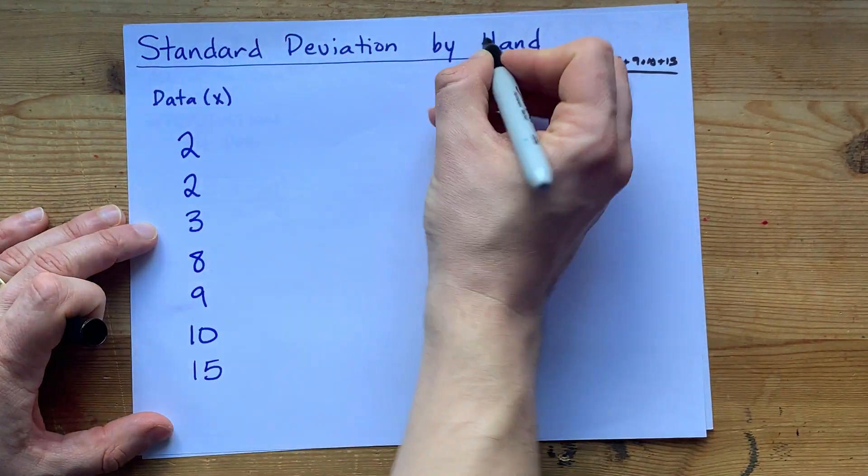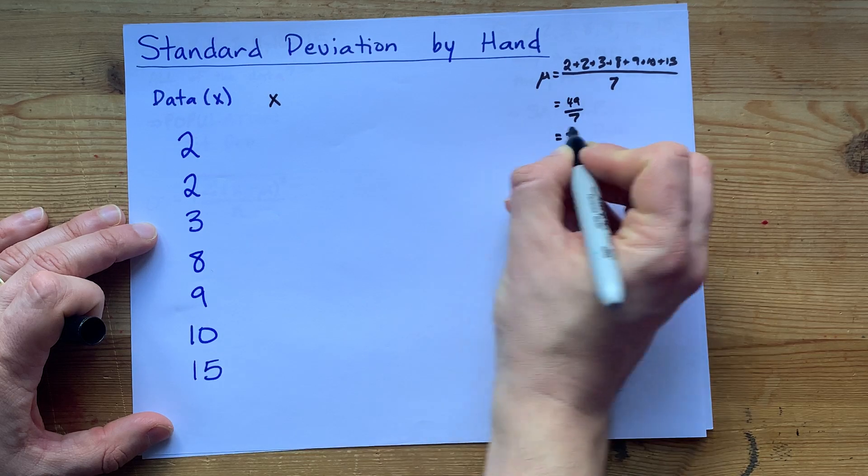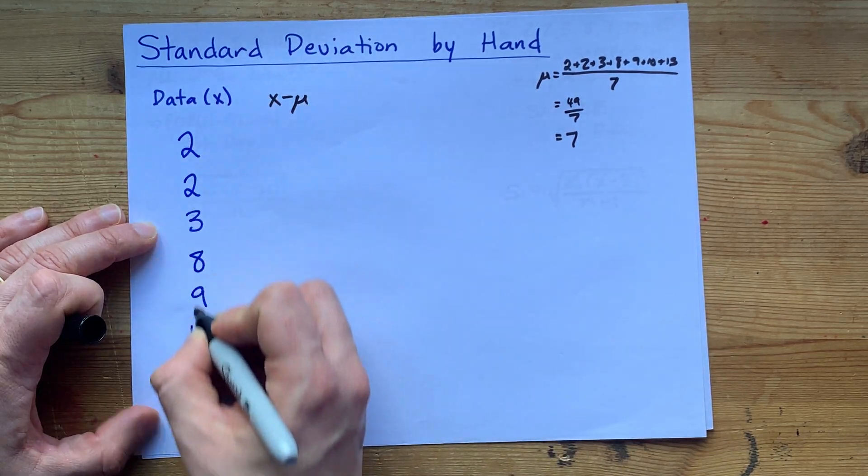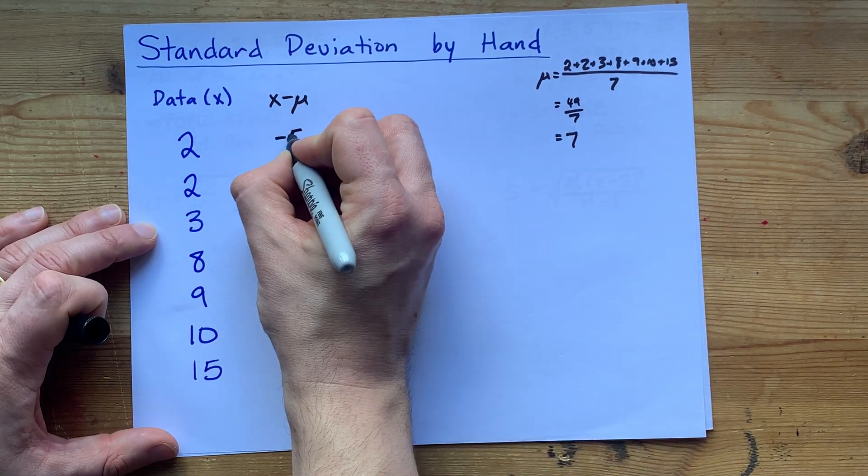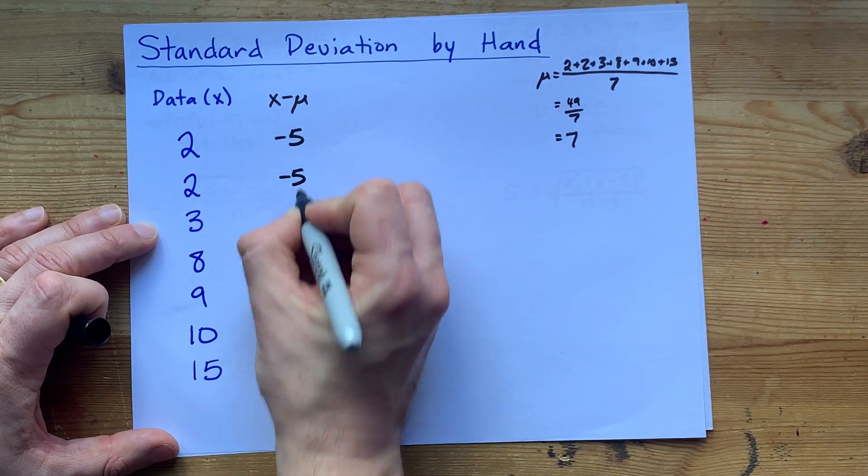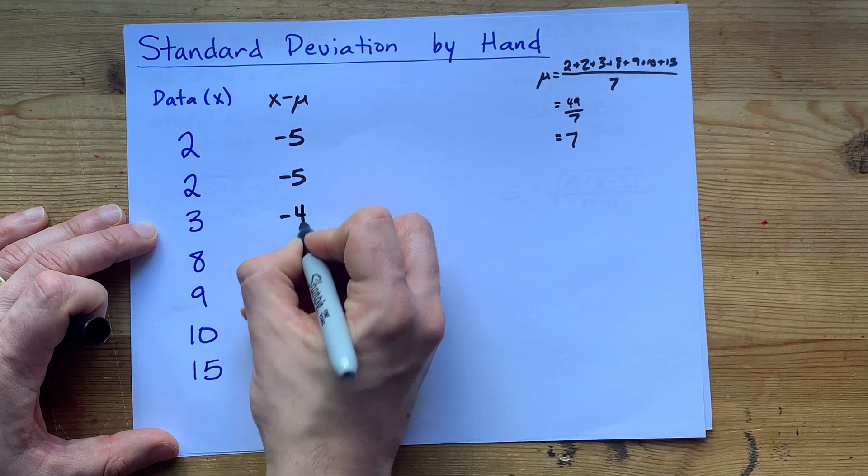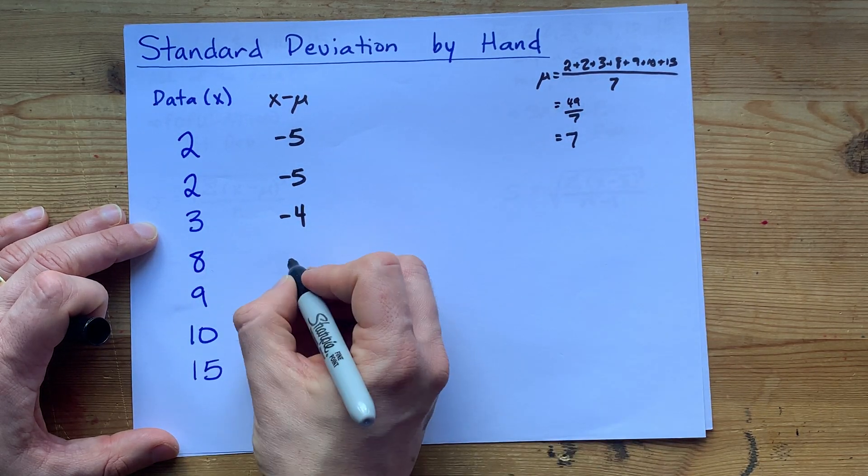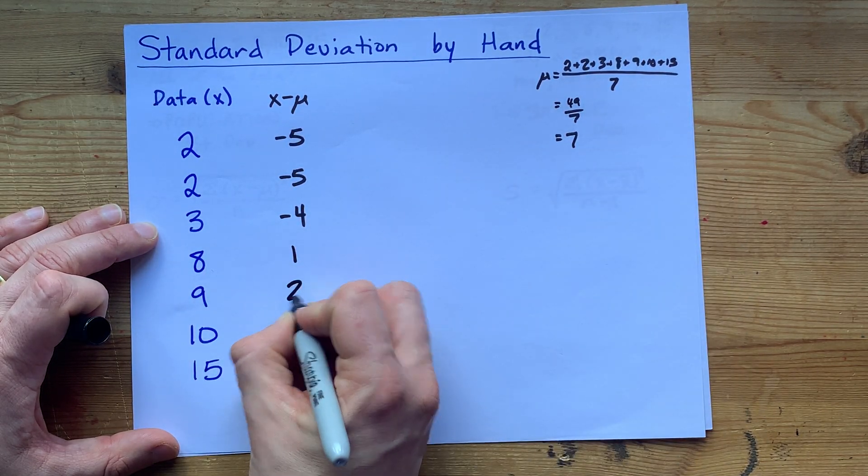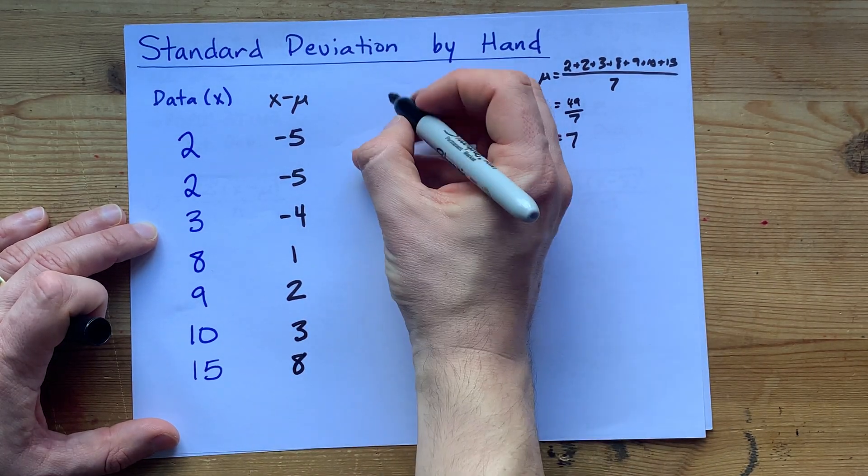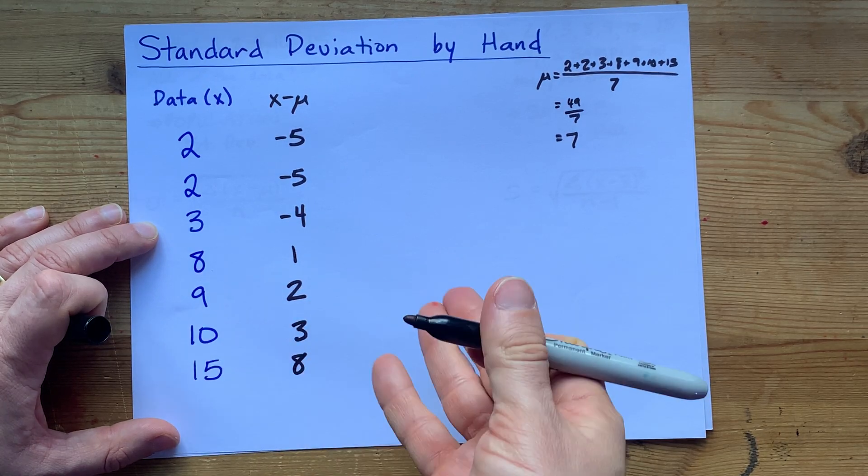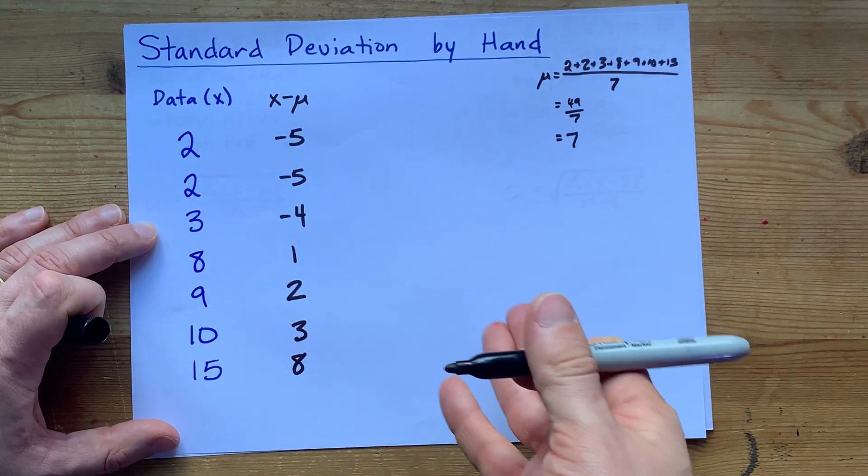Now, to find the standard deviation, I want you to take that mean and subtract it from all of those numbers. 2 minus 7 is negative 5, negative 5. 3 minus 7 is negative 4. 8 minus 7, 9 minus 7, 10 minus 7, 15 minus 7. There's some new numbers for you. These are the deviations.